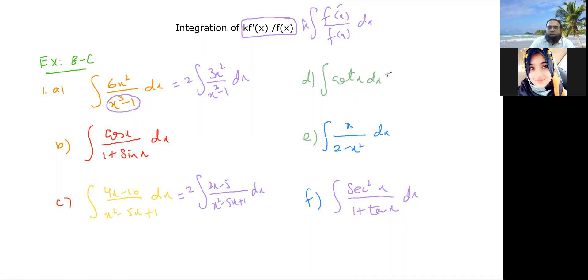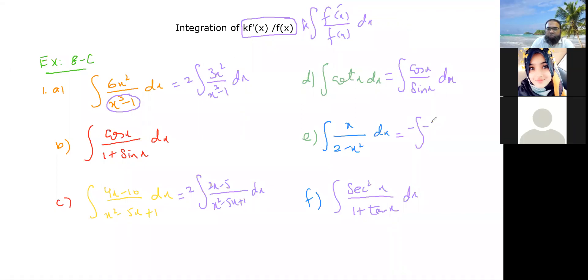And similarly, this cotangent x can be written as cos x over sine x. So this is absolutely in the form that we are talking about. And for this one, you will be writing it as minus, there is minus 2x over 2 minus x squared dx. And I should write this as minus one over two. We have to multiply and divide with minus 2 because 2 minus x squared's derivative is minus 2x. So we want this to be minus 2x instead of x.